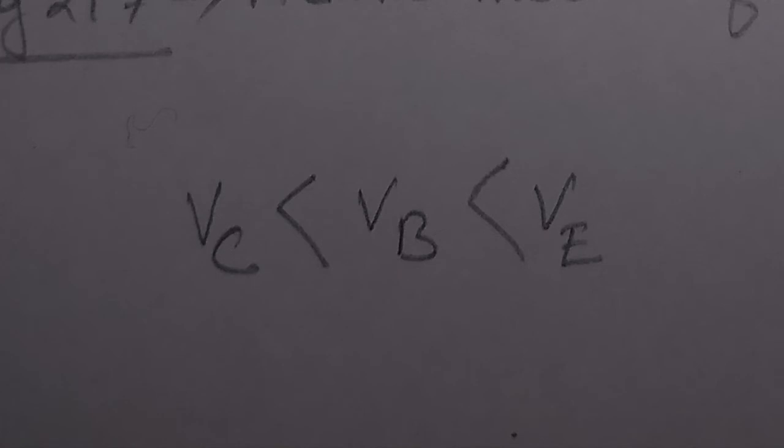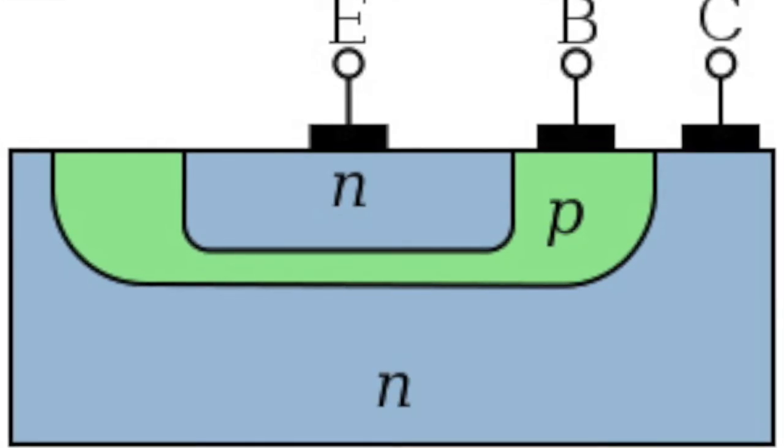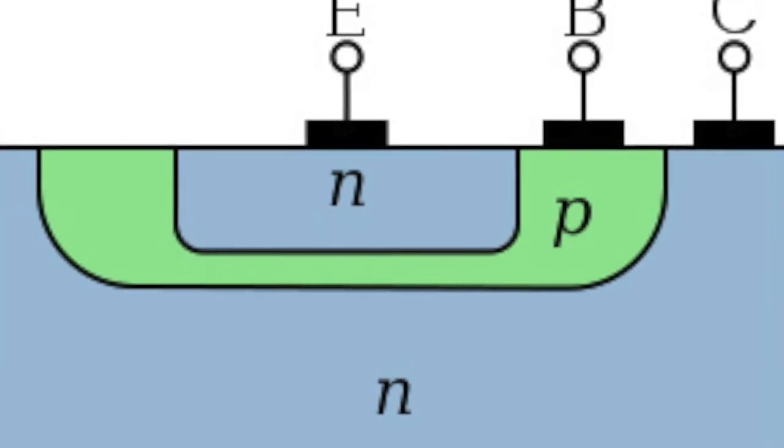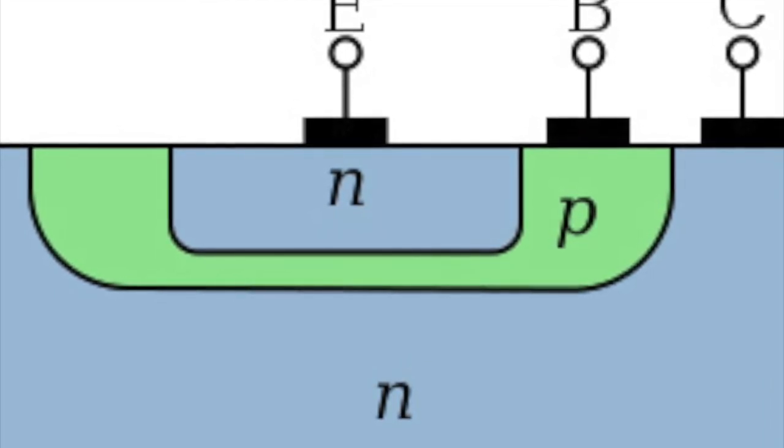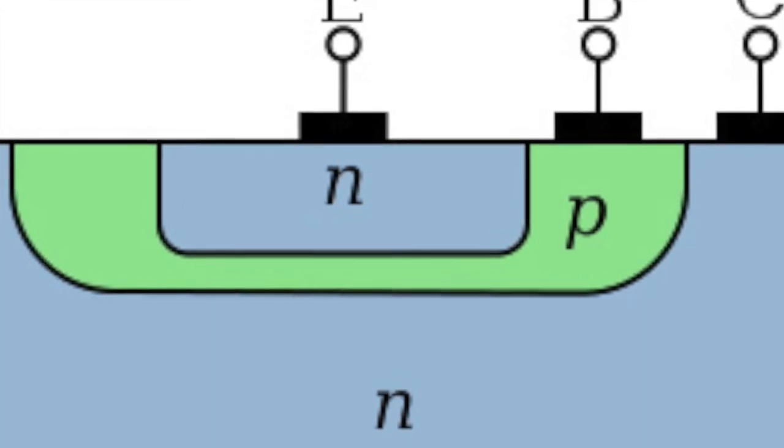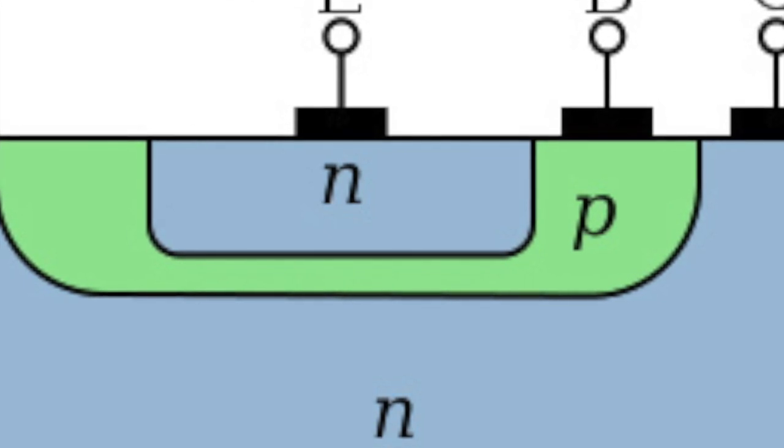To put a transistor in reverse active mode, the emitter voltage must be greater than the base, which must be greater than the collector. Just as saturation is the opposite of cut-off, reverse active mode is the opposite of active mode. A transistor in reverse active mode conducts, even amplifies, but current flows in the opposite direction, from emitter to collector. The downside to reverse active mode is the beta is much smaller.